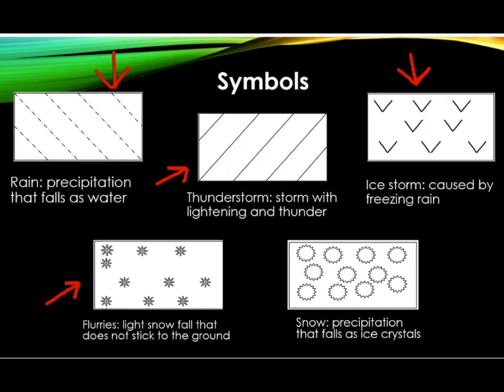This represents flurries, which is a light snowfall that does not stick to the ground and usually can't be measured. For heavier snow that can be measured and sticks, this symbol is used. Snow is precipitation that falls as ice crystals, made by water vapor that freezes without first becoming water. By studying fronts and pressure systems, meteorologists can create general predictions about weather. These forecasts can be represented on weather maps using symbols like the ones shown here.